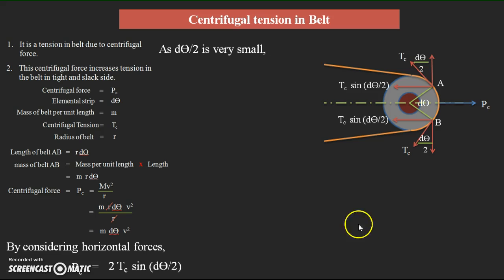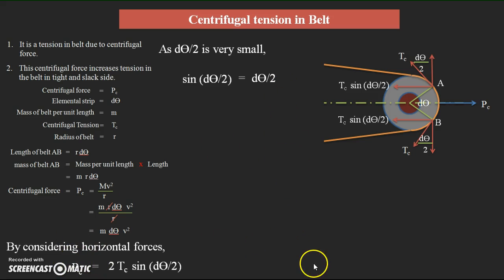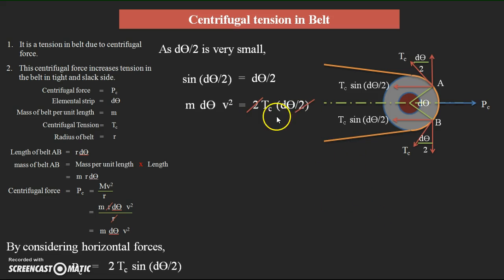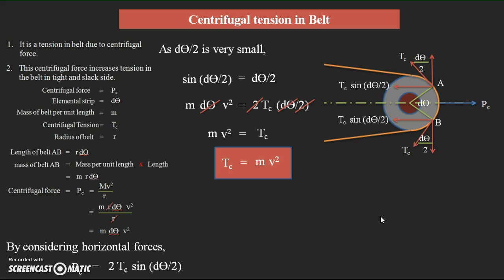Since dθ/2 is very small, sin(dθ/2) ≈ dθ/2. Substituting PC = m·dθ·v²: m·dθ·v² = 2·TC·(dθ/2). The 2 and dθ cancel on both sides, giving the final result: TC = m·v². This is the equation for centrifugal tension in the belt — it depends on the mass per unit length and the square of the linear velocity.